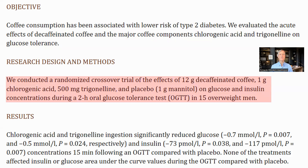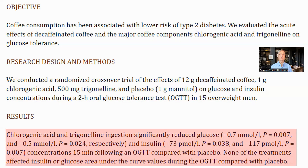The participants were 15 overweight men. What they saw was that trigonelline and chlorogenic acid reduced glucose and insulin in the first 15 minutes, though they did not reduce the total area under the curve in an oral glucose tolerance test. An OGTT is when the participant is given a drink with glucose and the glucose levels in the blood are measured at times afterwards, with the aim of seeing how long it takes for the glucose to be cleared. It does not say here, but the coffee on its own did not lower the glucose in the same way.